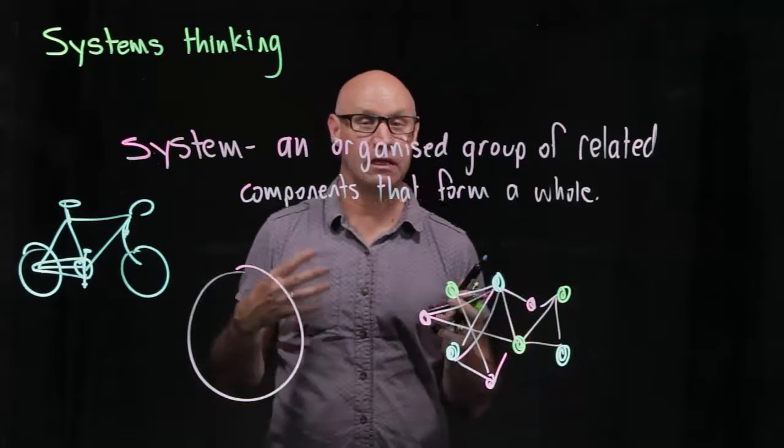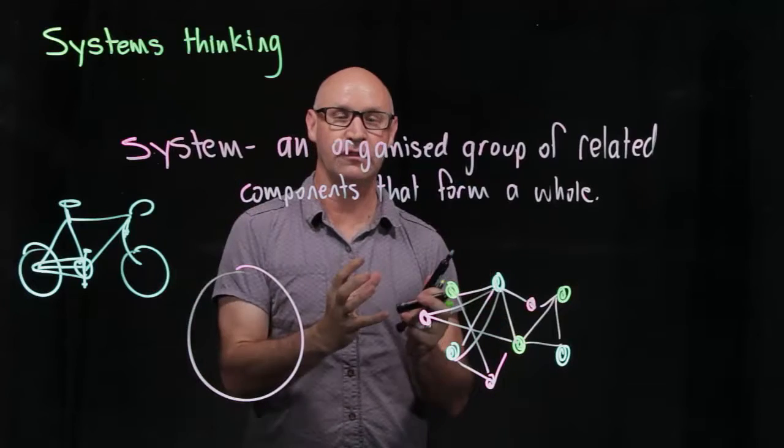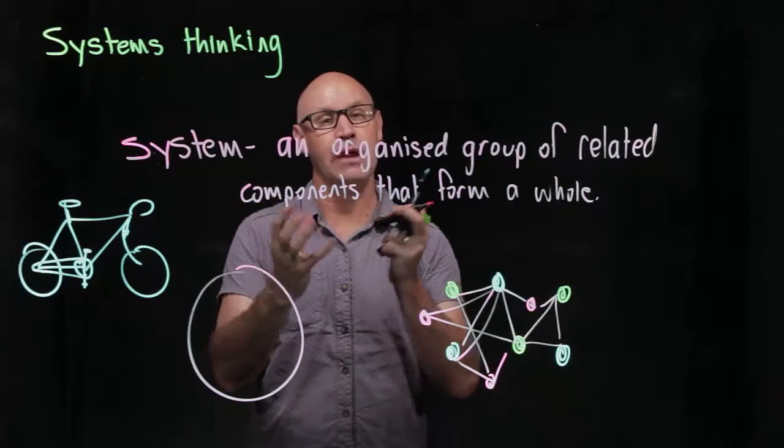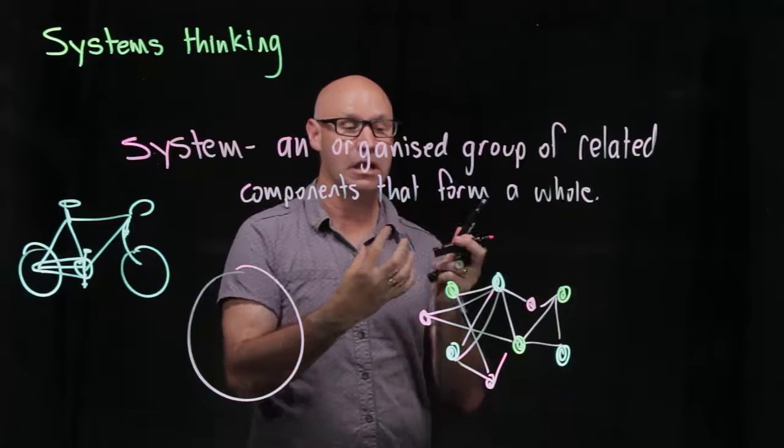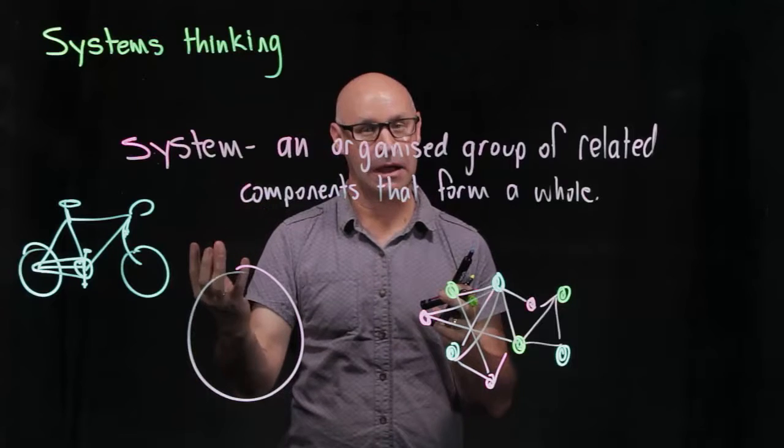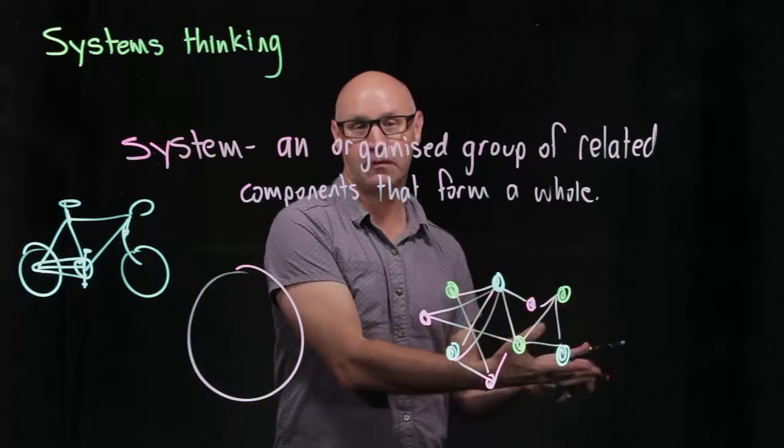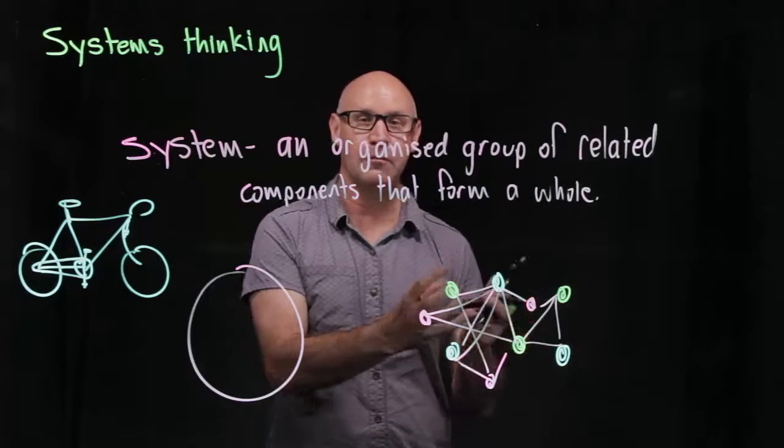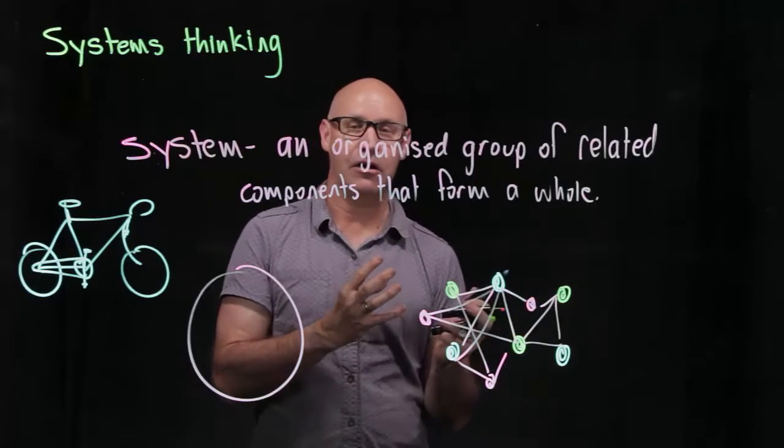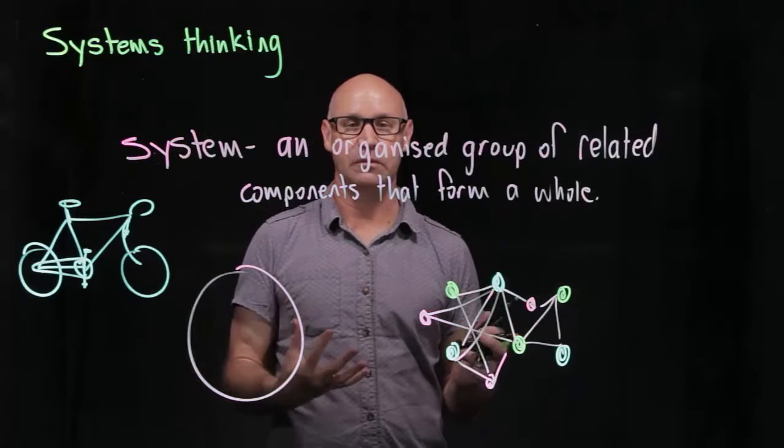Another example would be in digital technologies because a computer system is an interaction of a whole series of different parts of a computer and making a change in one part of the computer can actually have an impact on the performance of the computer elsewhere. So again we need to understand how systems interact and that's what systems thinking is.